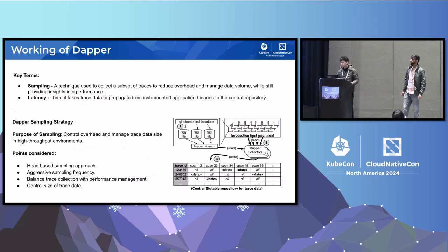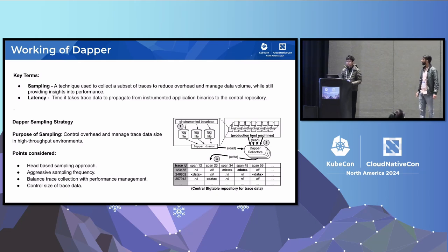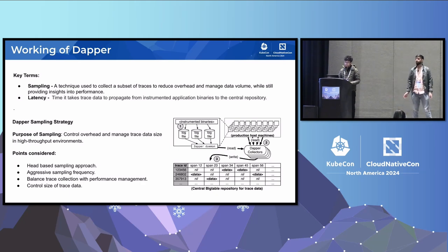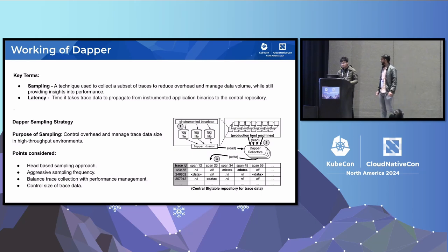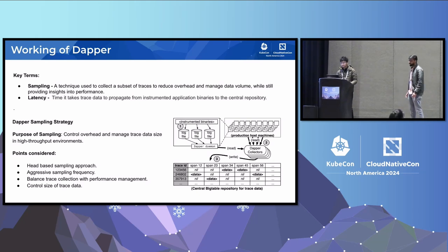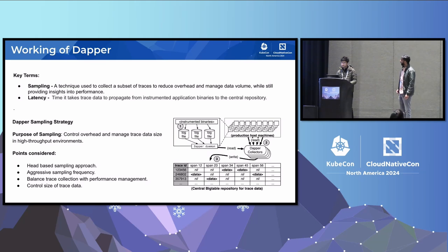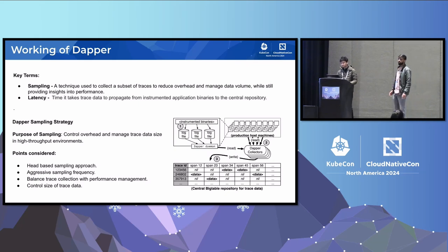As Akash showed, the history of distributed tracing spans over a decade — but it all started with Dapper. Dapper was the most influential implementation of distributed tracing and had everything: how to collect traces from code, how to instrument code, how to sample traces, how to save it, and how to analyze it. It was a Bible for distributed tracing. We will go in-depth specifically about the sampling strategy that Dapper used, because this is the main problem we faced and the basis for the solution we came up with.